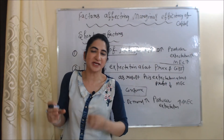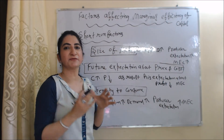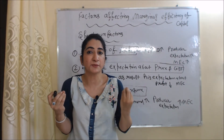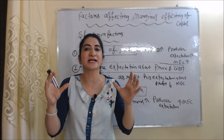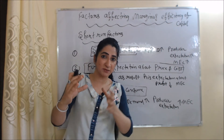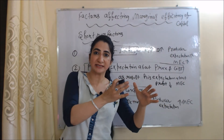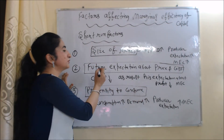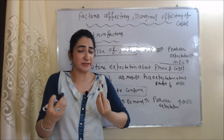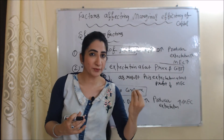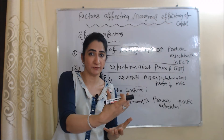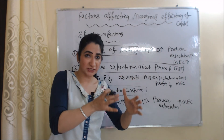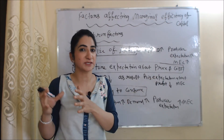Now we will talk about short-run factors that affect marginal efficiency of capital. First is size of market: if the size of the market is big, demand is high, producer expectations about profit are high, and so MEC is high. Second is future expectation about price and cost: if producers think that in future the price of the product will fall and cost will increase, their expectation about profit will fall, and so MEC will also fall.